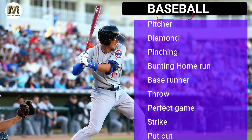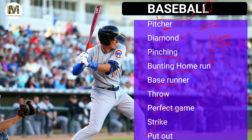Then let's look at Baseball. There are some important terms used: Diamond, Pinching, Bunting, Home Run, Base Runner, Throw, Perfect Game, Strike, and Put Out. I have played Baseball during my school times, so I know this game very well. I want you to comment below — write which game you have played in your school or college. It will be really very interesting. Baseball was among the games I have played.